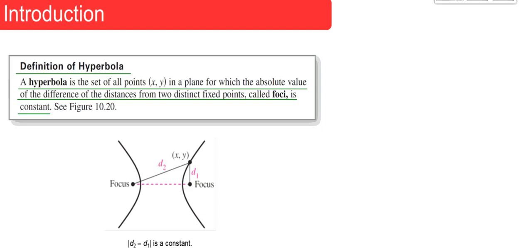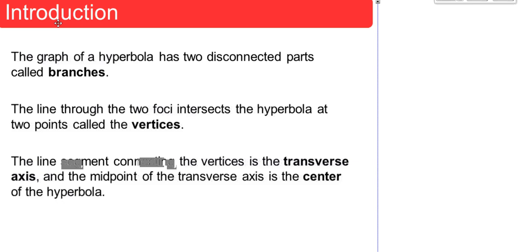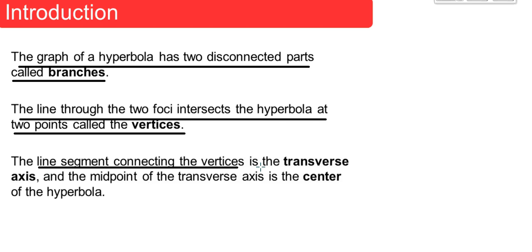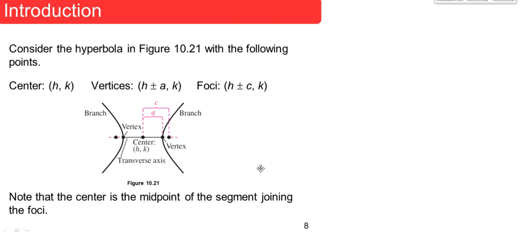The graph of a hyperbola has two disconnected parts called branches. A line through the two foci intersects the hyperbola at two points called the vertices. The line segment connecting the vertices is called the transverse axis, and the midpoint of the transverse axis is the center of the hyperbola.